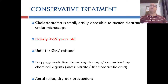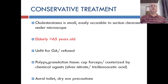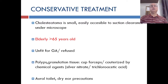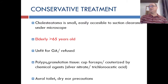There is a very limited role for conservative treatment of cholesteatoma. It applies only when the cholesteatoma is very small and easily accessible to suction clearance under the microscope, when there is a very shallow retraction pocket in pars flaccida, or in elderly patients unfit for general anesthesia or who refuse surgery. Polyps and granulation tissue can be removed with cup forceps or cauterized with chemical agents like silver nitrate and trichloroacetic acid, along with aural toilet and dry ear precautions regularly.